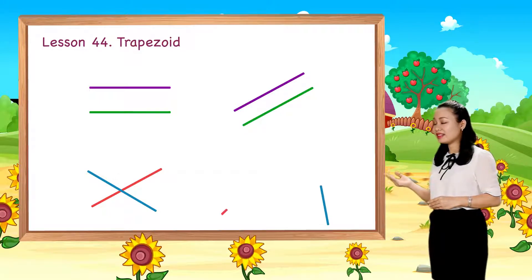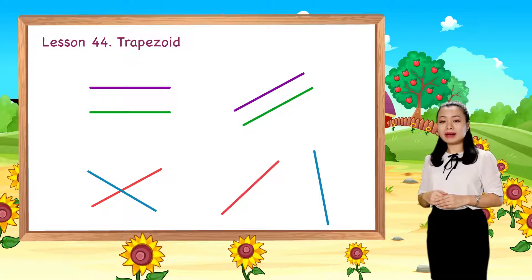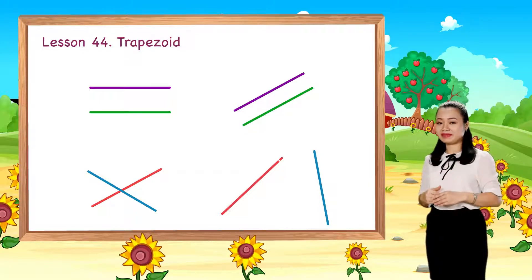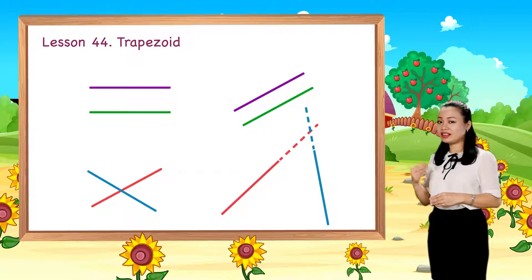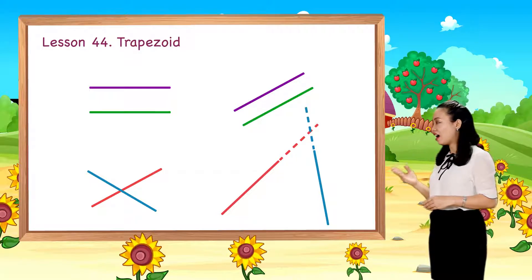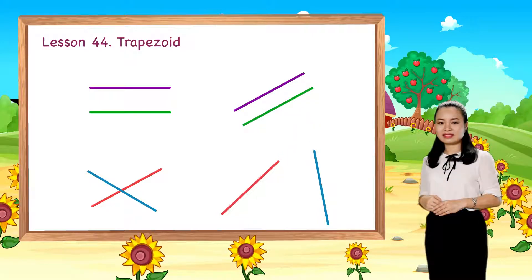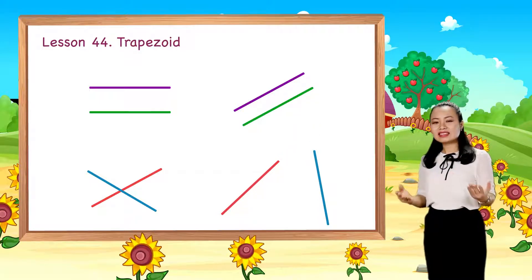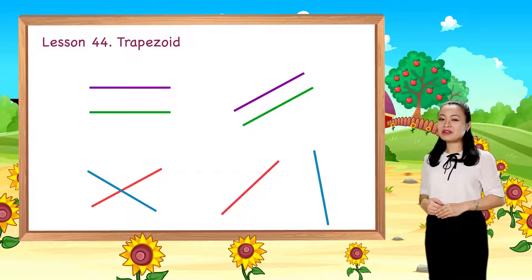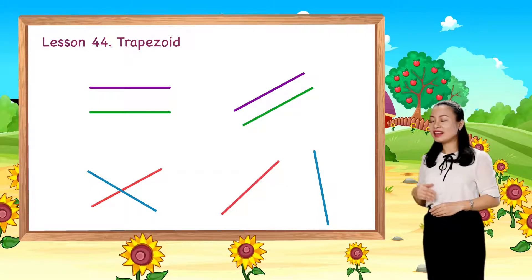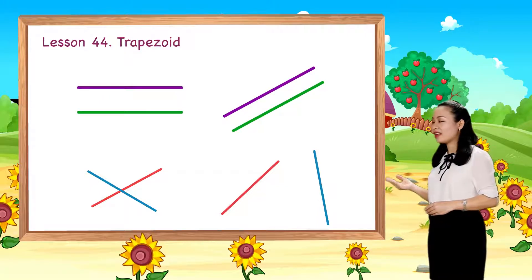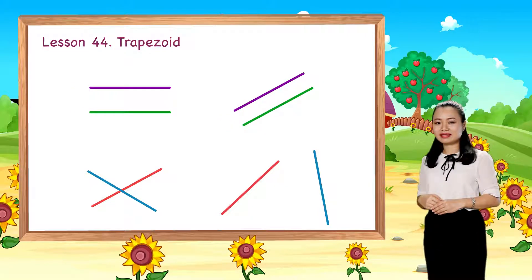These lines are not parallel either, because they will meet each other at a point. So now you can recognize lines that are parallel and those that are not.